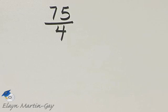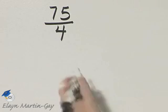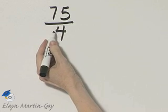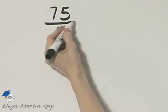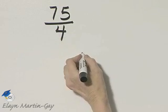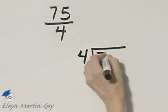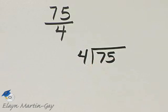Let's write this improper fraction as a mixed number or a whole number. Remember our fraction bar means to divide, so we find 75 divided by 4, or 4 into 75. So let's divide.